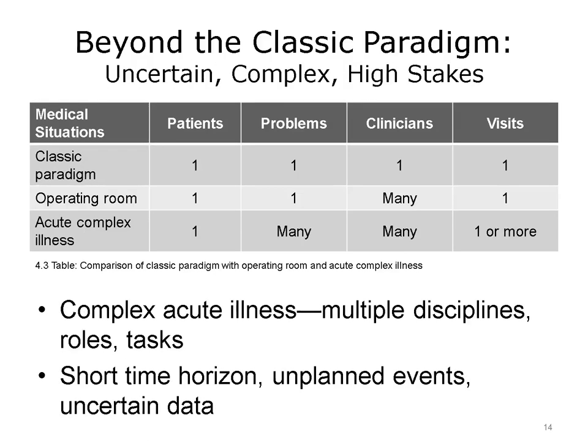Another setting that differs from the classic paradigm is complex acute illness. In this setting, one patient may be cared for in one or more visits by multiple clinicians dealing with multiple health problems—for example, the patient may have lung disease, kidney disease, joint disease, an infection, or pre-existing chronic conditions such as diabetes and hypertension. Multiple clinicians may perform multiple tasks over one or several patient visits. There is often a short time horizon as well as unplanned events, and there is almost always a great deal of uncertainty about some of the data, especially in critical care settings focused on immediate goals. Because of unanticipated events and uncertain data, clinicians must remain flexible to allow dynamic replanning as necessary. Clinical information systems designed for such a context might have different requirements than those designed for simple one-to-one settings.